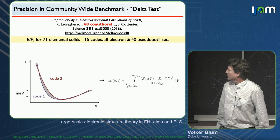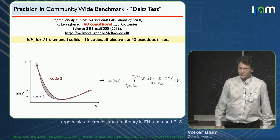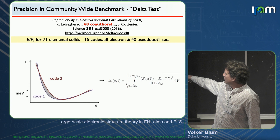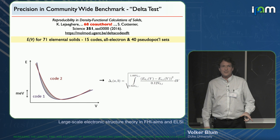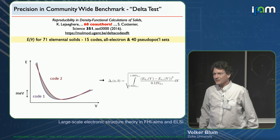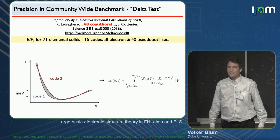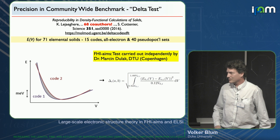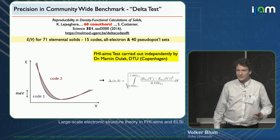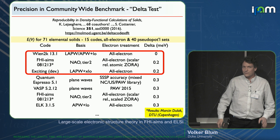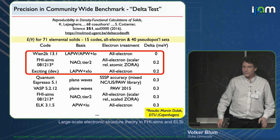Why do we know it works? Stéphane Cottenier did the delta test published in Science, convincing about 40 datasets and 70 co-authors to compare results for energy-versus-volume curves for 71 elements. In our case, the test was carried out by somebody else with the manual. We ended up with our highly precise settings in the range close to all-electron values, more or less indistinguishably close to the others. Those values, I'm proud to say, we did not have to change — the others over the years moved closer to us.